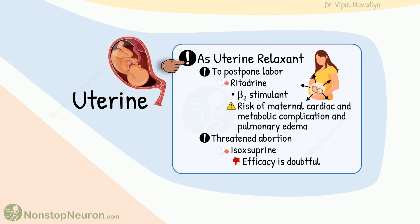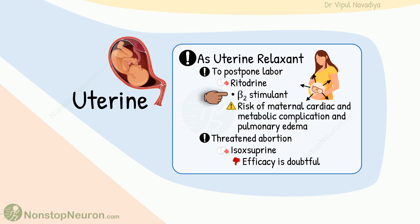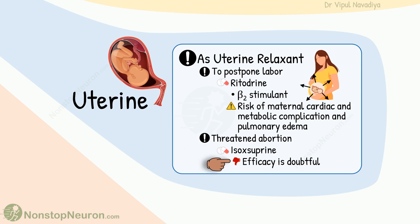As uterine relaxants, adrenergic drugs can be used to postpone labor and in threatened abortion. To postpone labor, ritodrine may be used. During pregnancy, the number of beta-2 receptors increases in the uterus, and stimulation by adrenergic drugs relaxes the uterus. However, there is a risk of maternal cardiac and metabolic complications and pulmonary embolism. In threatened abortion, isoxsuprine can be used, but its efficacy is doubtful.